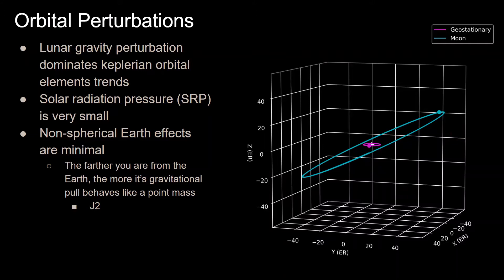These orbits only stay above a certain point on Earth exactly on the equator if you assume no orbital perturbations. Now, even though the perturbations on these orbits are small, we still need to consider them in order to accurately model these orbits.